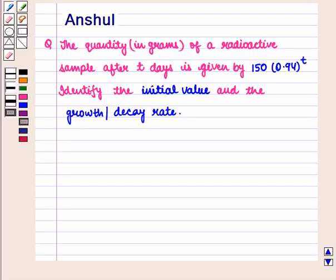Hello and welcome to the session. In this session, we are going to discuss the following question. The question says that the quantity in grams of a radioactive sample after T days is given by 150 times 0.94 raised to power T. Identify the initial value and the growth or decay rate.